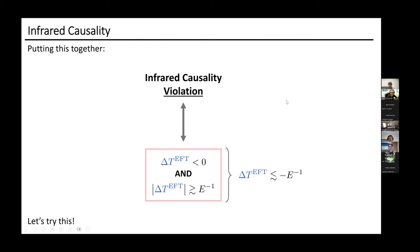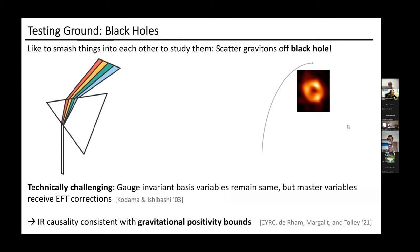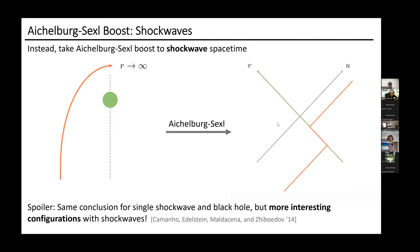One thing you might want to do is try this on an example. The best testing ground we have is to scatter off black holes. We did this in a previous paper in spherical symmetry — just scattering about a Schwarzschild black hole. The decomposition is complicated, but at the end you find that it's essentially consistent with positivity bounds. What I'm going to talk about in this talk is an analogous situation where you take the Aichelburg–Sexl boost of a black hole.